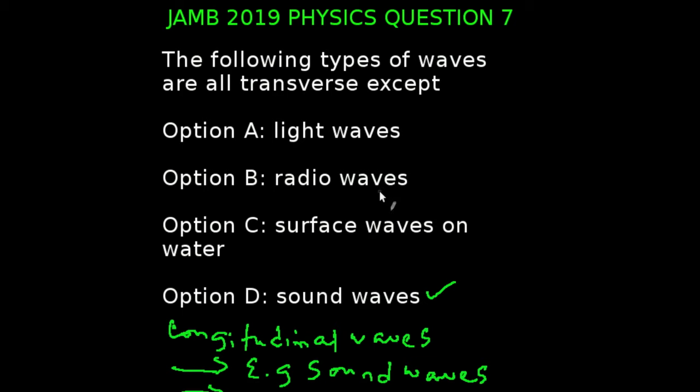The following types of waves are all transverse, except: a, light waves, b, radio waves, c, surface waves on water, d, sound waves. Before we answer this question, let us take a look at waves. We have two types of waves, longitudinal waves, in which the vibration of the wave travels parallel to the direction of the wave travel.